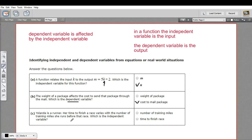And C says Yolanda is a runner. Her time to finish a race varies with the number of training miles she runs before the race, which is the independent variable. So they basically tell us here in this language. It says her time varies with the number of training miles.